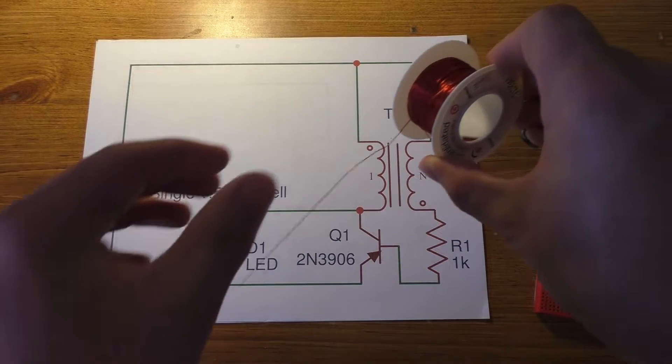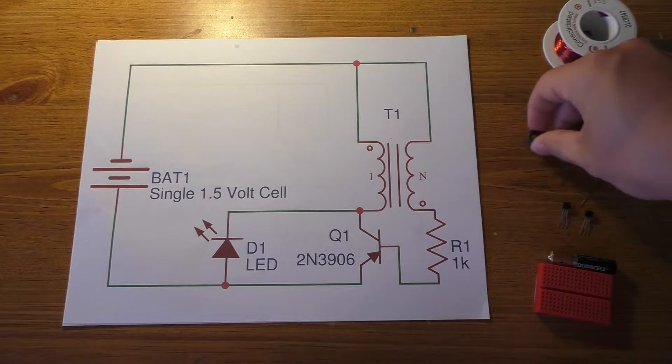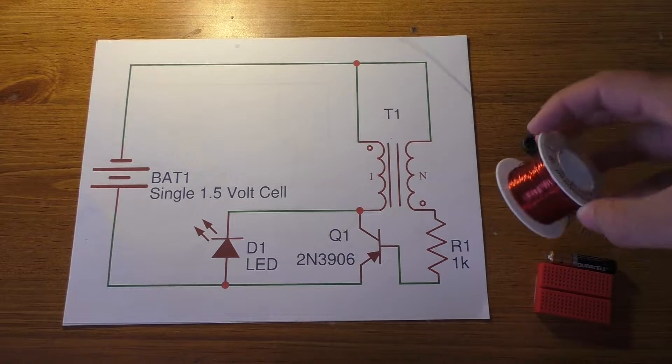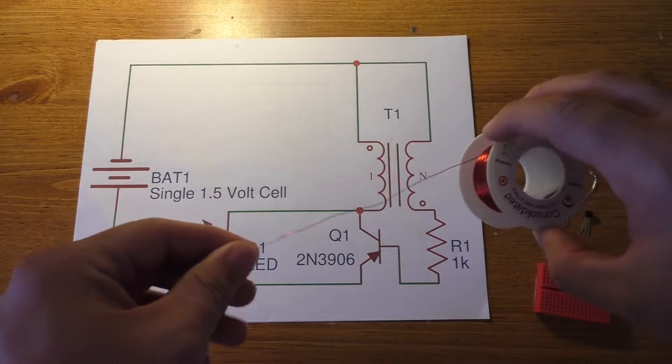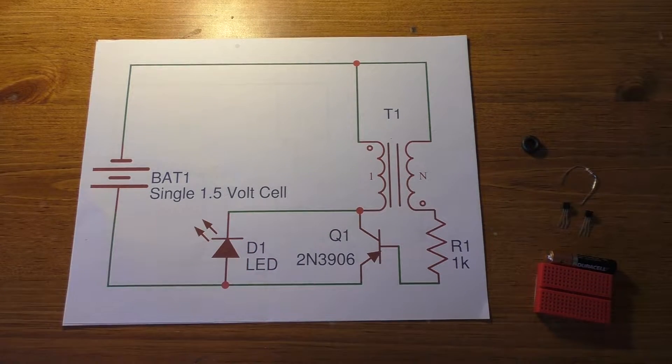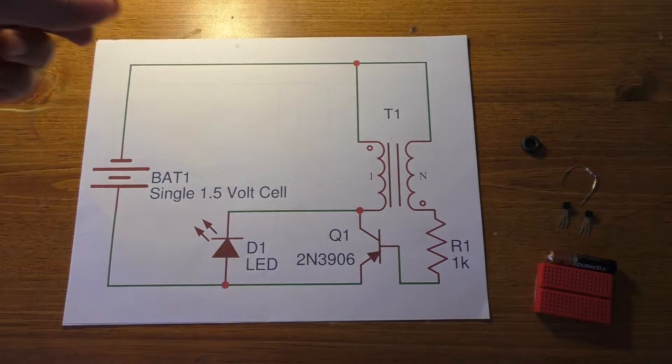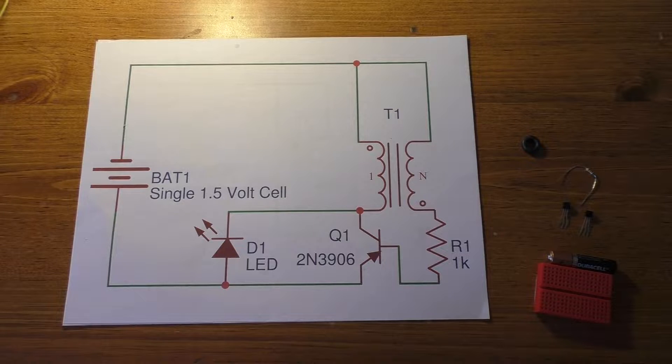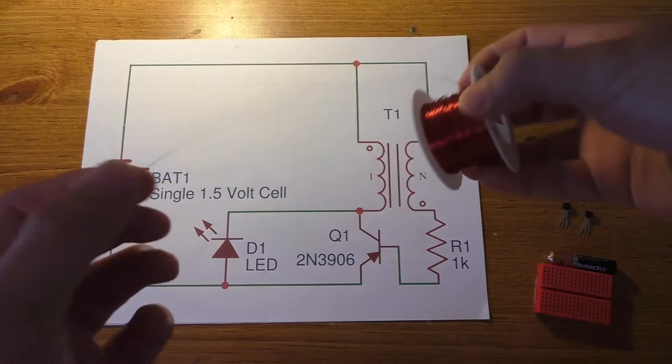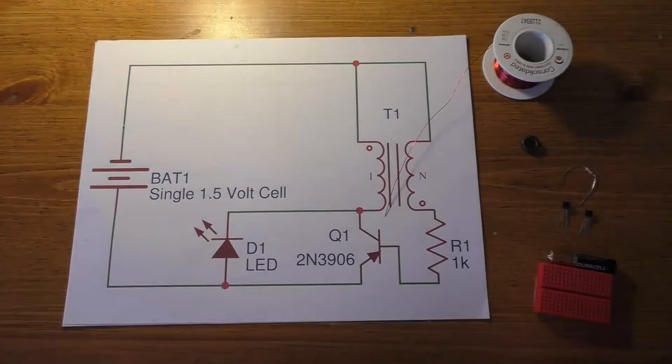And I'm using 26 gauge magnet wire mainly because I'm using this little tiny toroid. I want this wire to actually be able to fit into it. If you're using a larger toroid, you can just use standard insulated wire that has the plastic type insulation like what this has here. But I'm going to use the magnet wire because I've got a bunch of it and might as well because this is actually what it's meant for.